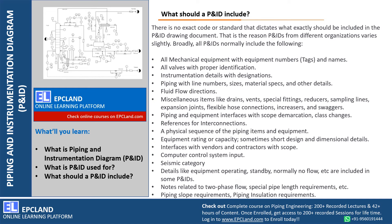For equipment in a P&ID, the top section of a page represents the design conditions and dimensional details of that particular equipment. Interfaces with vendors and contractors are also shown — for example, for compressors, lube oil or rundown tanks — what is in vendor scope and what is in contractor scope. Scope demarcations will always be there. Computer control system details, unit seismic categories, and equipment operating status details like standby and normally-no-flow are also included. There will also be a lot of notes on the P&ID related to two-phase flow, special pipe lengths, and process requirements.